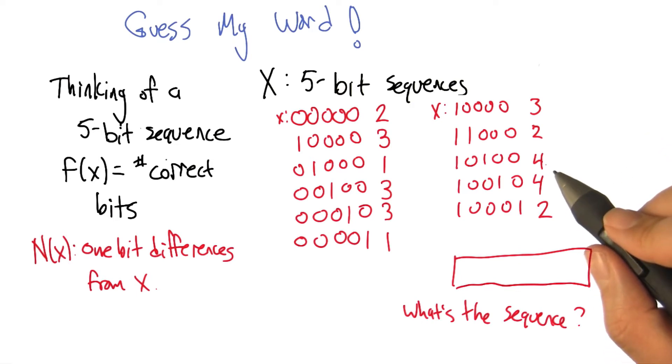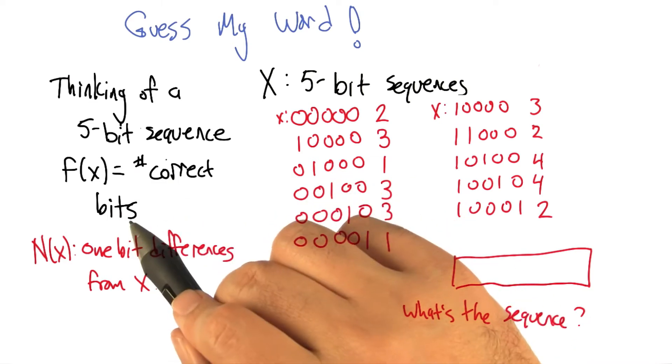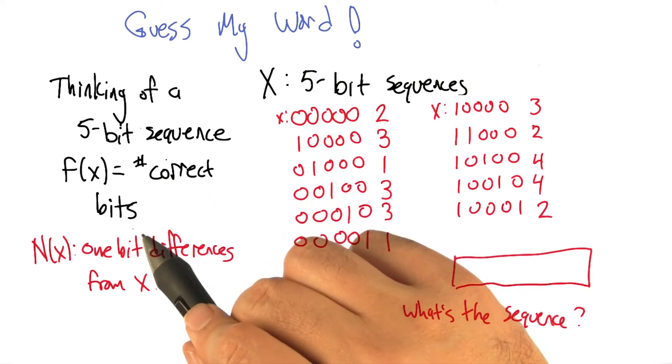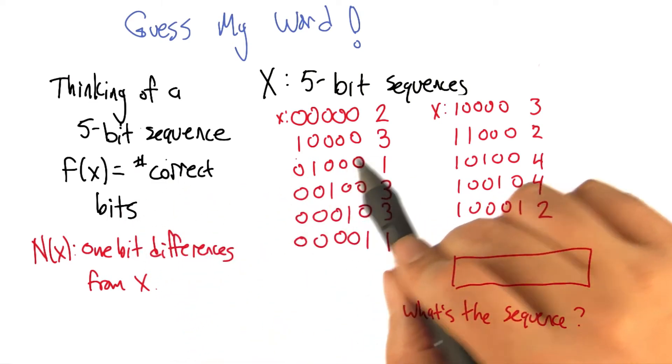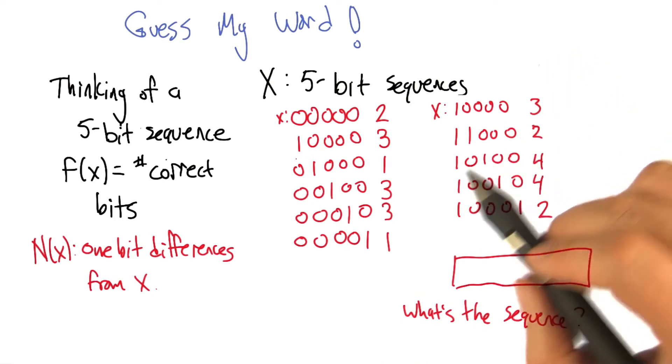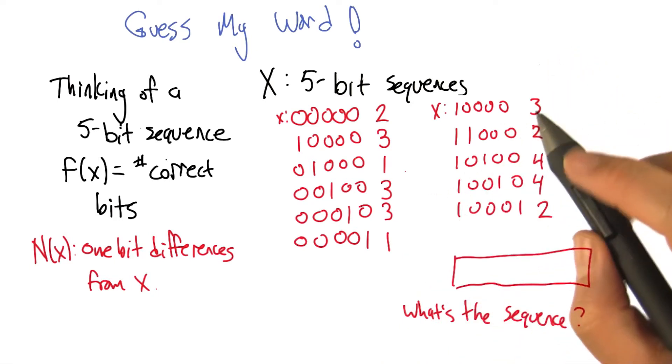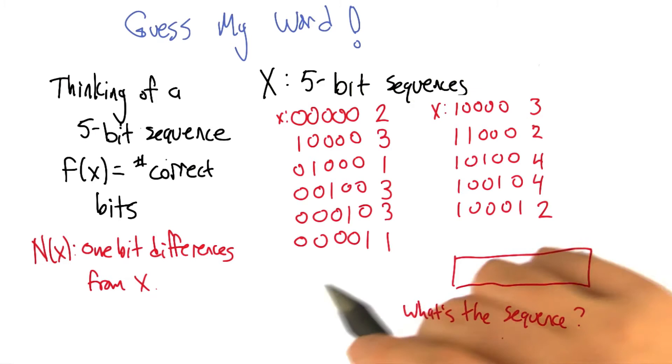Yeah, because in this particular case, because the fitness function is the number of correct bits, there's always a neighbor that is one step closer to the target. So we're always going to be incrementing as we go. This is a very friendly fitness function.